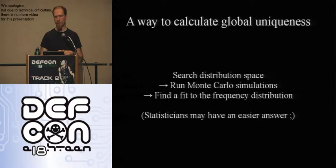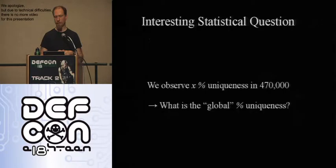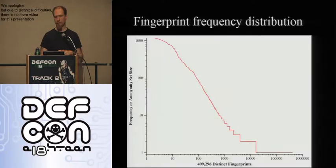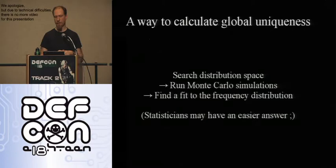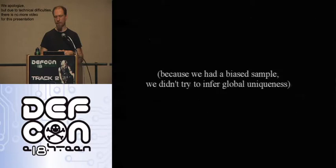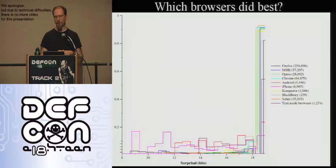I have a theory about how to solve it involving Monte Carlo simulations — you try a hypothesis probability distribution, run it through a simulation, and see if it produces a graph that looks like that. But we didn't try to do this because our data set, which is just a measurement of privacy-conscious users, is not meaningfully representative of the one to two billion browsers in existence. So if someone else has a less biased data set, you could do this statistical analysis. We didn't try.